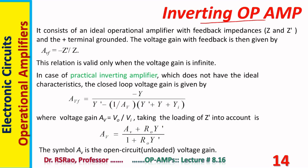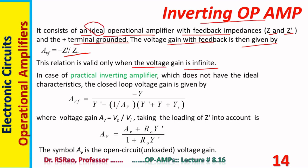More on the inverting op-amp: it consists of an ideal op-amp with feedback impedances Z and Z prime, and the plus terminal grounded. The voltage gain with feedback A_VF is then given by minus Z prime by Z. This relation is valid only when voltage gain is infinite — the ideal op-amp case. In the case of a practical inverting amplifier without ideal characteristics, the closed-loop voltage gain is given by minus Y by Y prime, minus 1 over A_V times Y prime plus Y plus Y_I, where voltage gain A_V accounting for load Z prime is A_V plus R_0·Y prime over 1 plus R_0·Y prime.